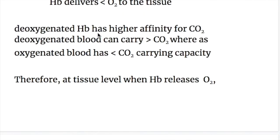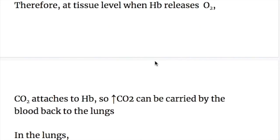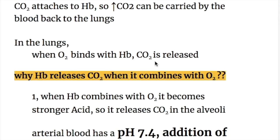Deoxygenated hemoglobin has a higher affinity for carbon dioxide. Deoxygenated blood can carry more carbon dioxide, whereas oxygenated blood has less carbon dioxide carrying capacity. Therefore, at tissue level, when hemoglobin releases oxygen, carbon dioxide attaches to hemoglobin, so increased carbon dioxide can be carried by the blood back to the lungs.